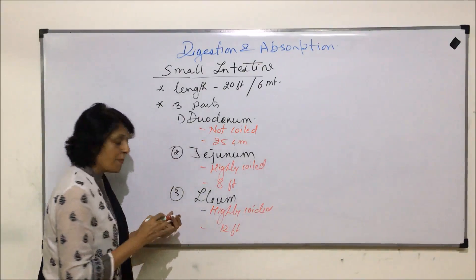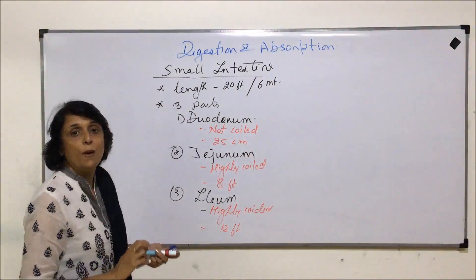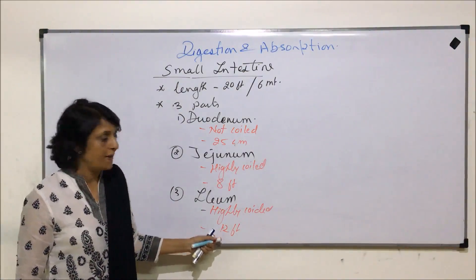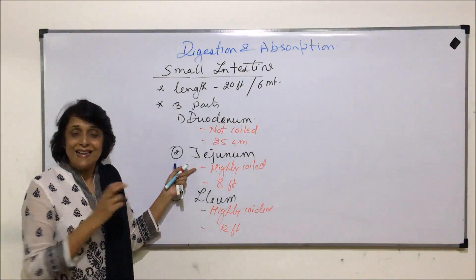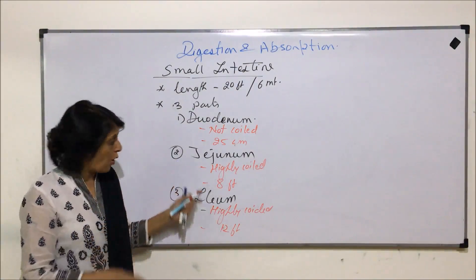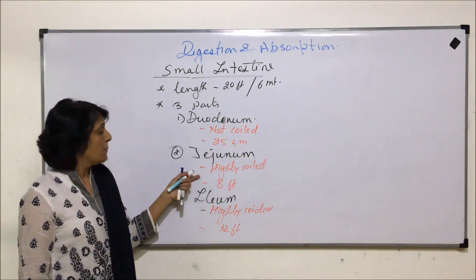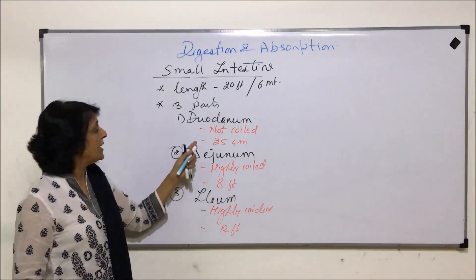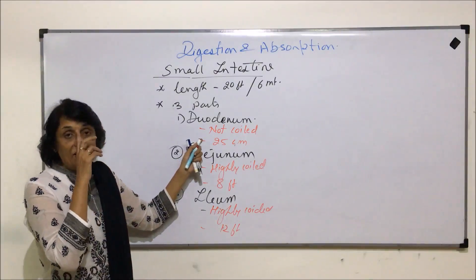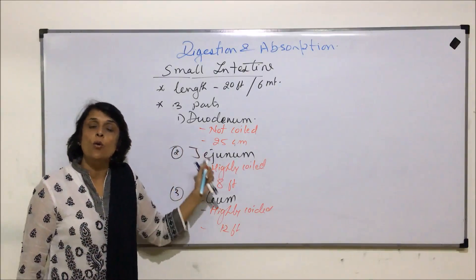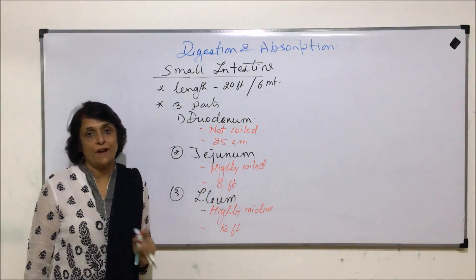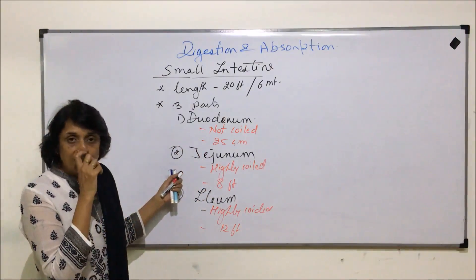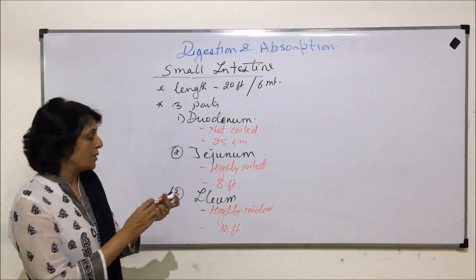If we compare the three parts: ileum is the longest at about 12 feet; jejunum is less long but also a substantial part at 8 feet; and the duodenal part is only 25 centimeters. We will take the internal structure also in a minute, but let us quickly go over this.